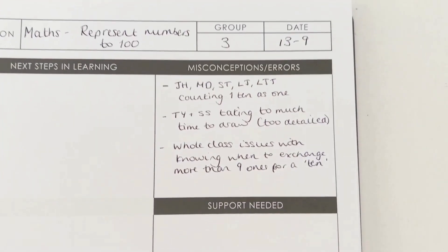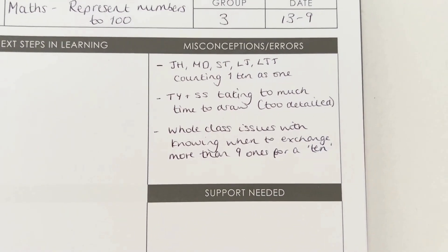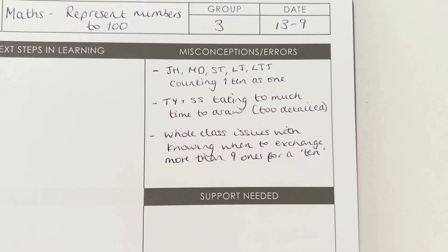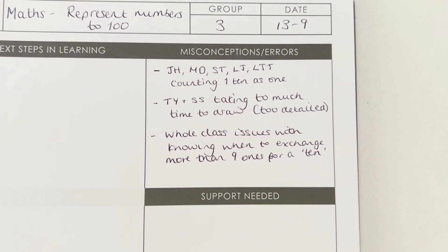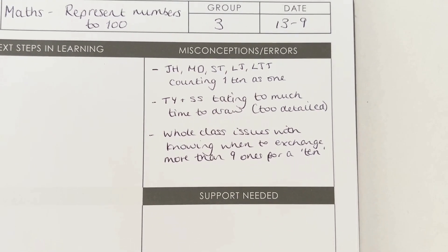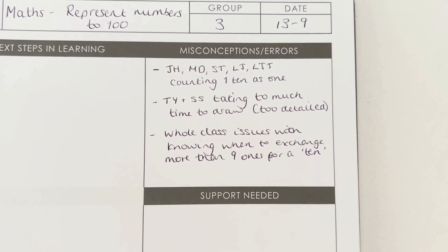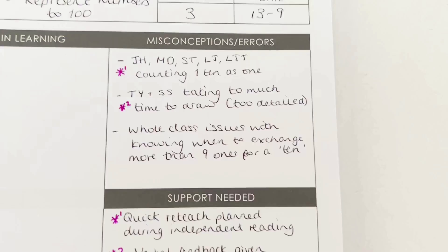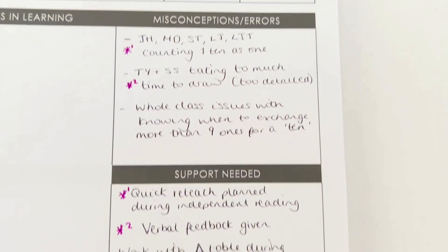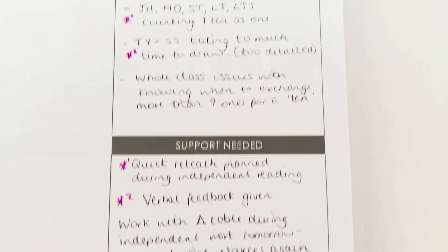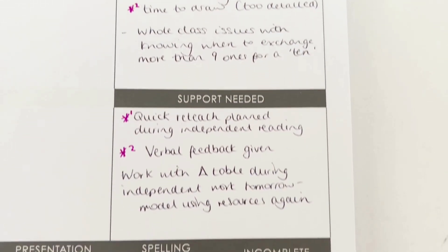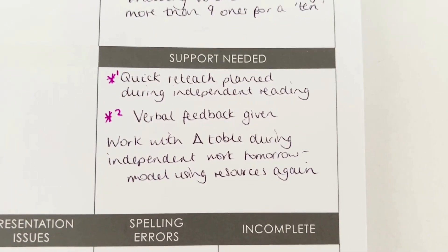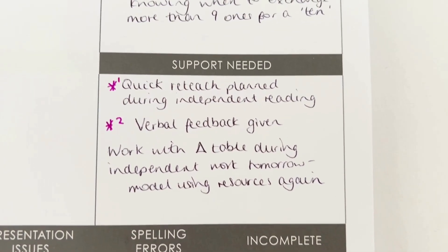So for my imaginary Year 3 class, I'm noting down specific initials of students that are having particular problems or misconceptions in the lesson, but also noting down any whole class issues that would then impact my planning for the next day. My misconceptions section is now feeding into the support needed section, so I have coded the misconceptions and planned how I'm going to address these going forward.